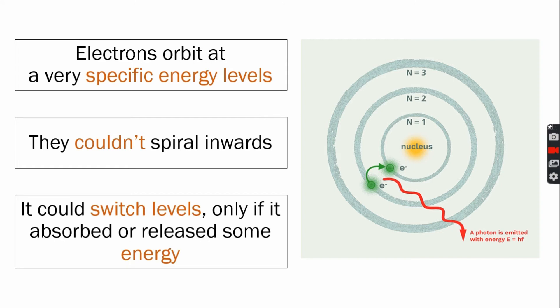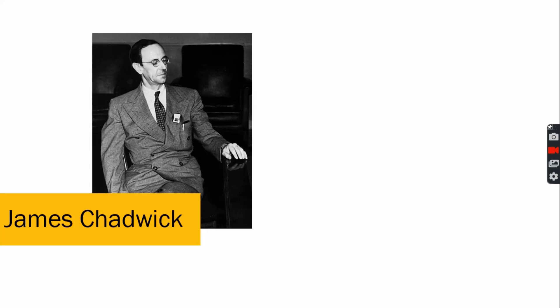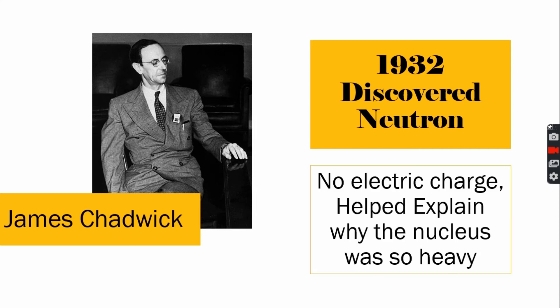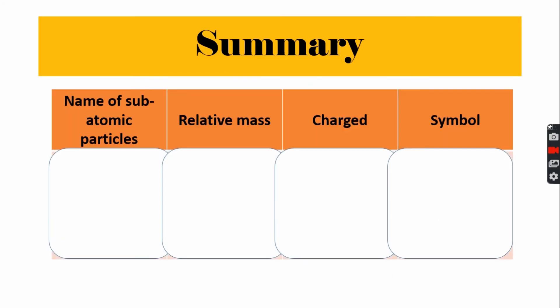One breakthrough was made in 1932, when English scientist James Chadwick discovered that neutrons exist. Neutrons weren't electrically charged, and they helped explain why the nucleus was so heavy. What a history. So to sum it up, recall what we've learned.